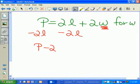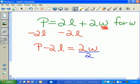So P minus 2L equals 2W. Then, just like we did on the last equation for x, we're going to divide every term by the coefficient in front of the variable we want to isolate, which is 2.